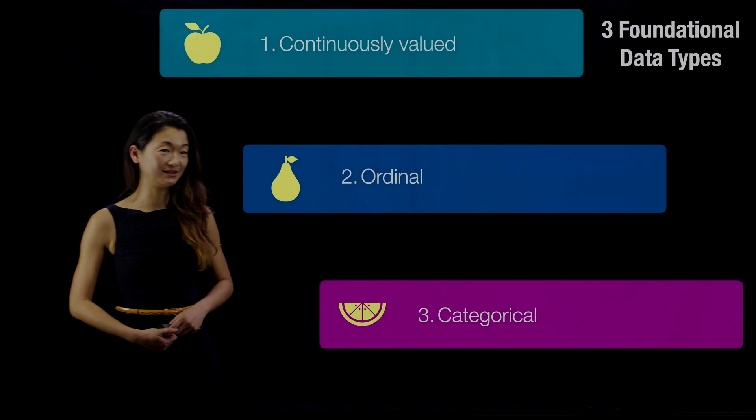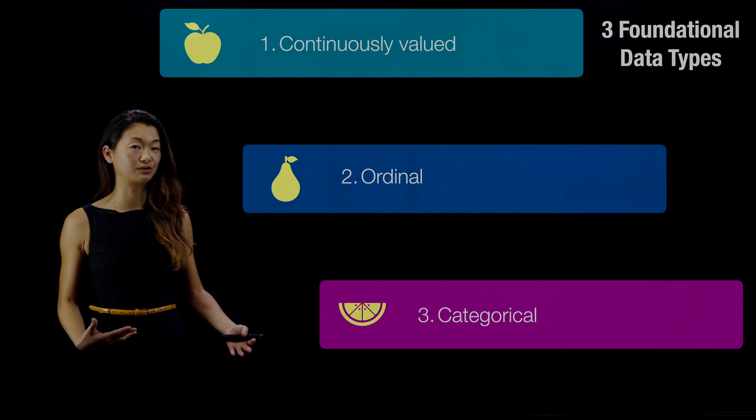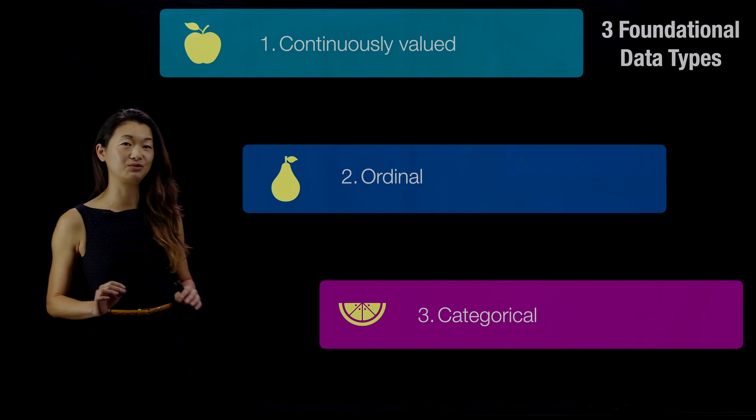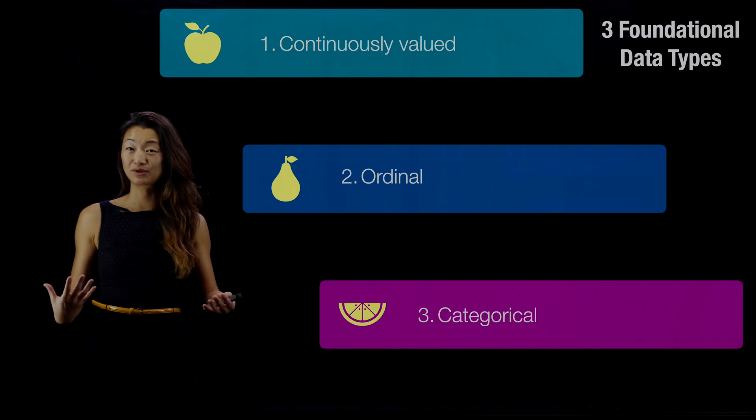So in my opinion, there are three fundamental data types, and I'm going to call them continuously valued, ordinal, and categorical. These are just different types of data, so it's really important that we pay attention to what they are, because trying to compare them and mix them is kind of like comparing apples to oranges.